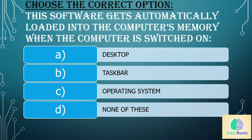Choose the correct option. Question 1: This software gets automatically loaded into the computer's memory when the computer is switched on. The options are: a) desktop, b) taskbar, c) operating system, d) none of these. The answer is c) operating system.